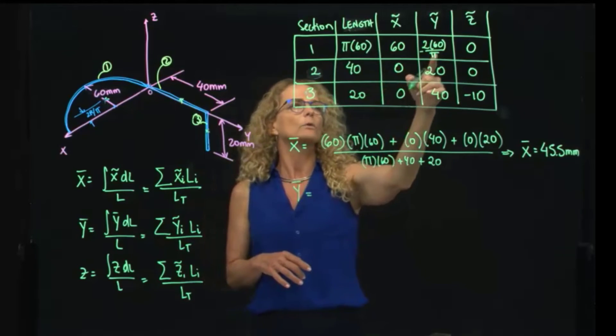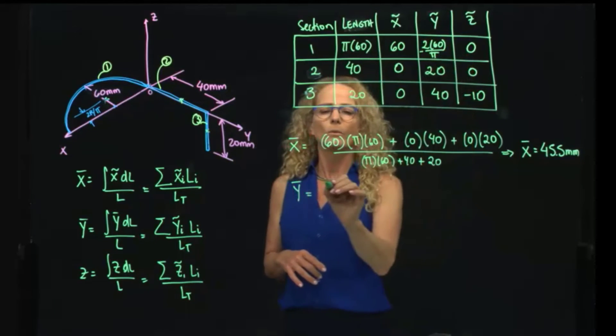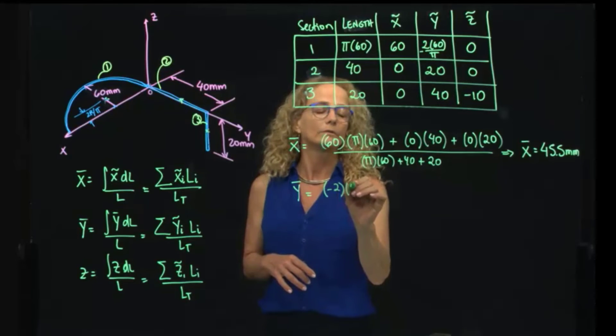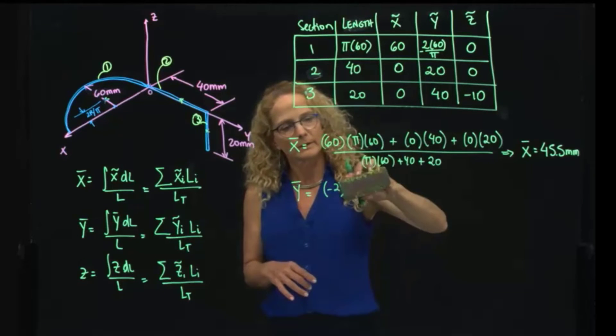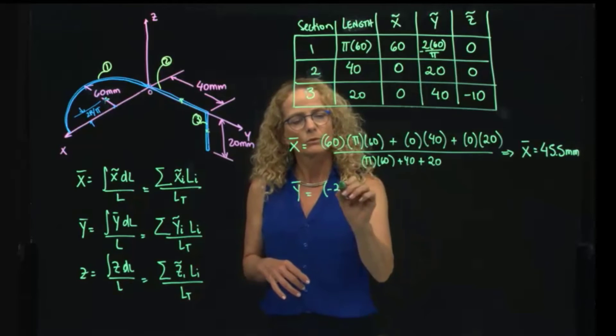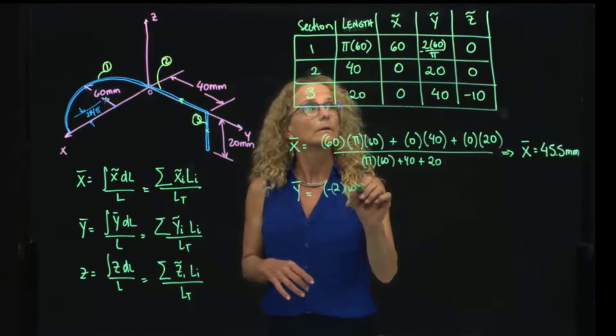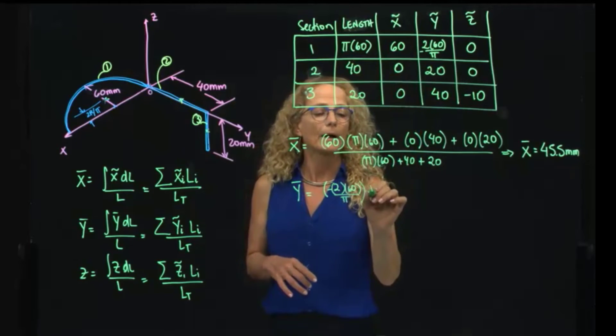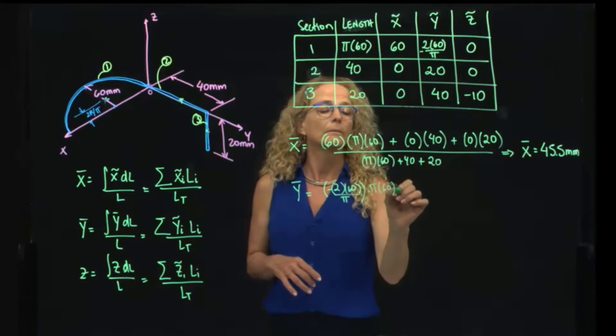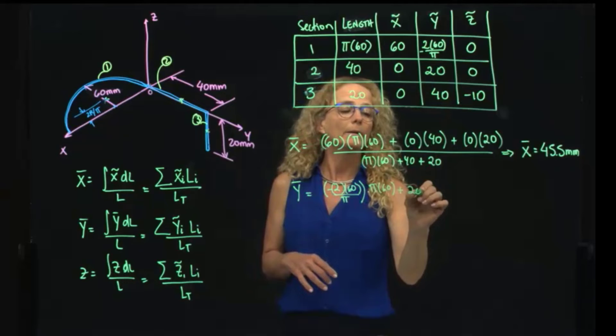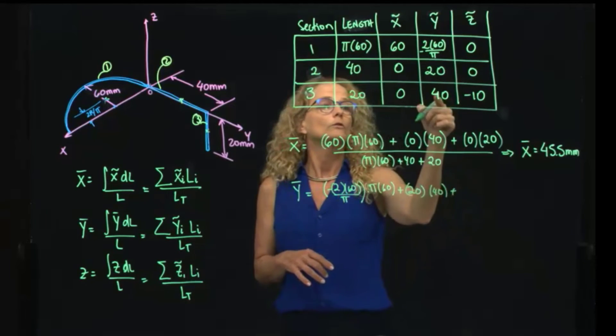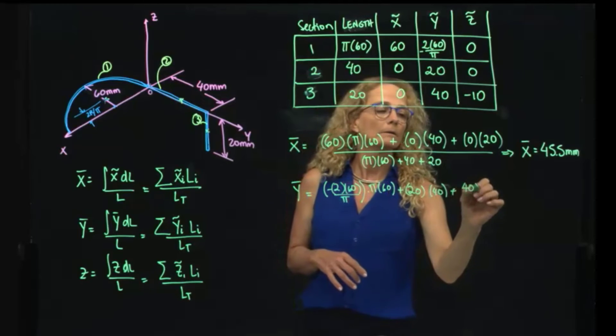We do the same for the y, and then now we have to multiply our y coordinate, which is negative 2 times 60. Let me put it like that: 2, 60, divided by pi, times pi, 60, plus 20 times 40, plus 40 times 20.